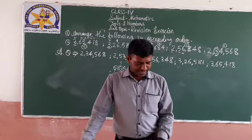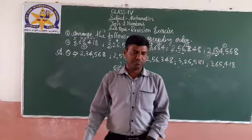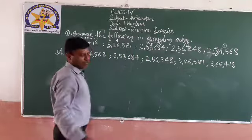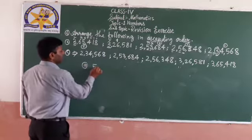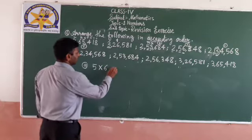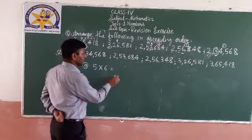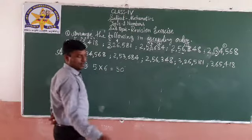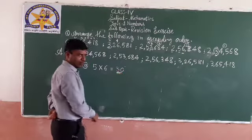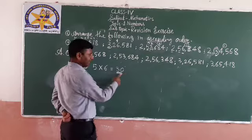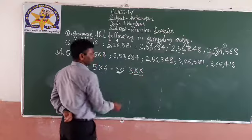Round off 666 to the nearest 100 — underline the hundreds place, focus on the tens place. Check if the tens digit is greater than 5, less than 5, or equal to 5. Here the tens digit is 6, so add 1: 6 plus 1 is 7. So the rounded number is 700.